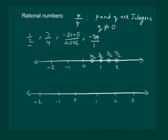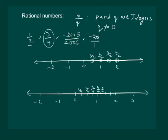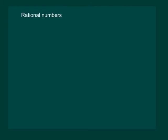Let us now try to represent 3 by 4 on the number line. To do that, we will divide each unit into 4 equal parts. The first division will represent 1 by 4, the second represents 2 by 4, the next represents 3 by 4, then 4 by 4, 5 by 4, 6 by 4, 7 by 4, 8 by 4. Hence we can see that the third division represents 3 by 4.